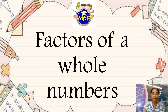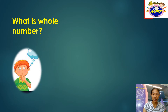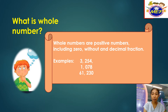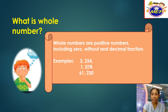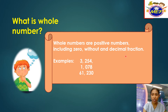Do you remember what whole numbers are and what factors mean? A whole number is a positive number including zero, without any decimal or fraction. So whole numbers are positive numbers including zero, and as you can see there is a zero — including zero, it's a whole number. A fraction is not a whole number, of course.